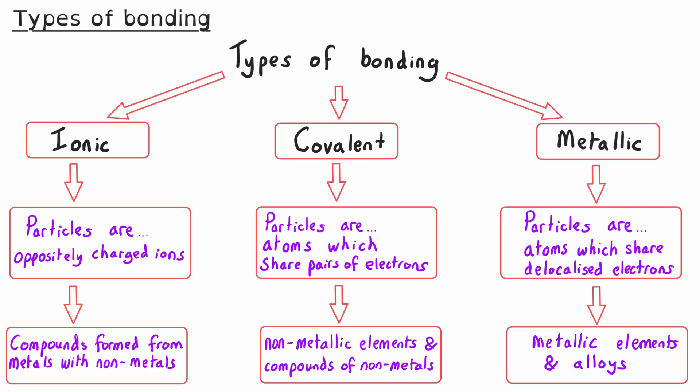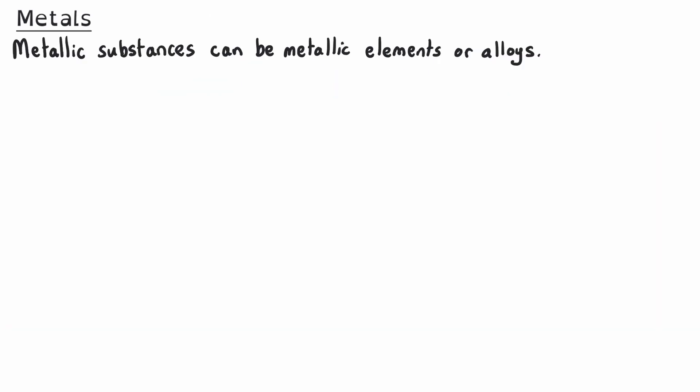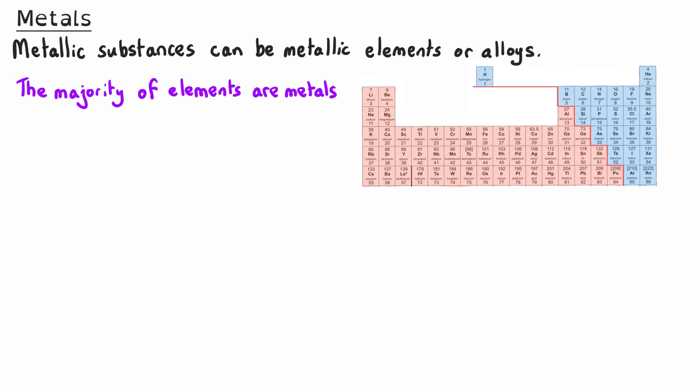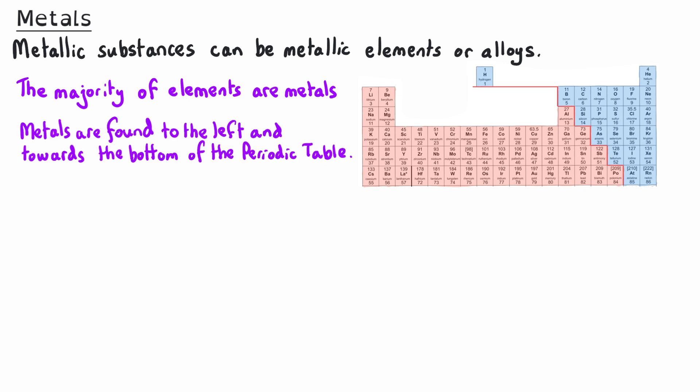In this video, we will be focusing on metallic bonding. When we're talking about metallic substances, we could be referring to metallic elements or to alloys. The majority of elements are metals, and you can see this from the periodic table shown here, where the metals have been highlighted in red. Metals are found to the left of the periodic table and towards the bottom.